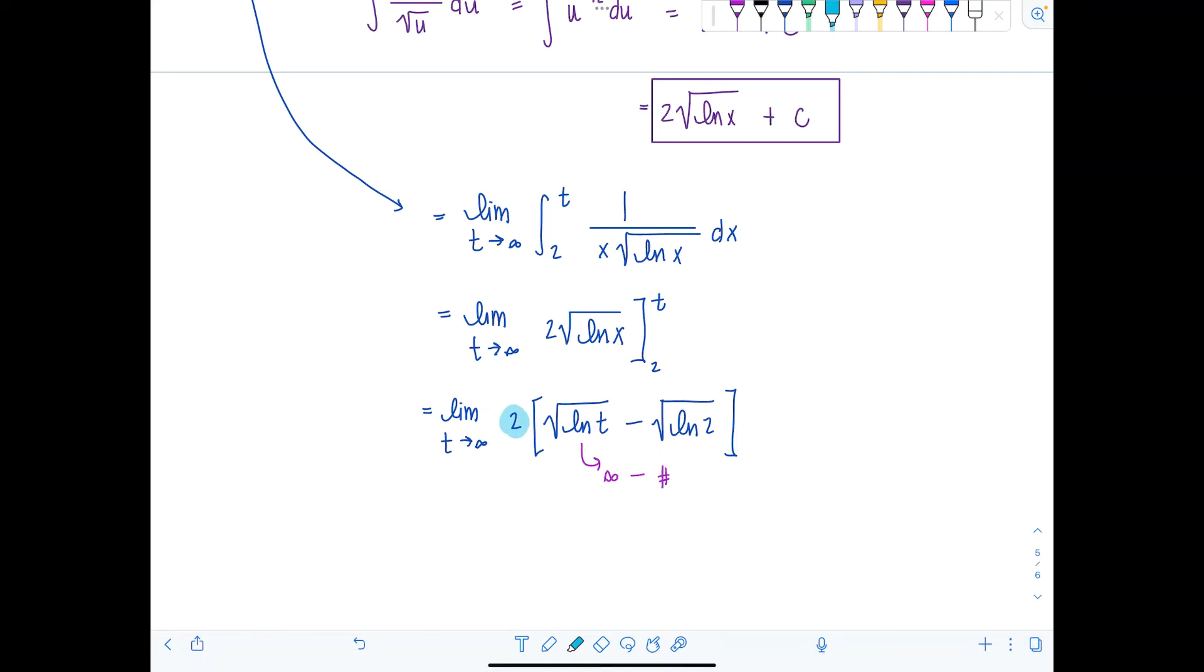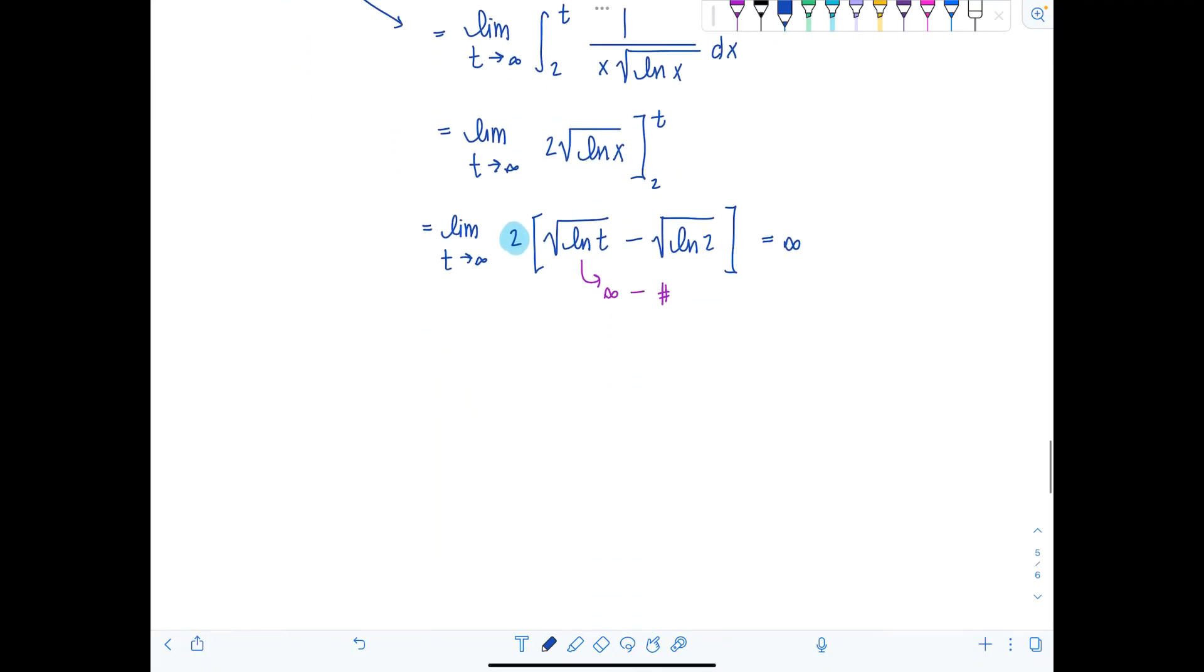And if you multiply by 2, it's getting there just a wee bit faster. So this thing is going to infinity. That limit is infinite. So what does that tell me? That tells me that the integral diverges, this improper integral diverges. Therefore, the sum n equals 2 to infinity of 1 over n rad natural log of n also diverges by the integral test. All right. I know that was a lot for one problem, but it is what it is.